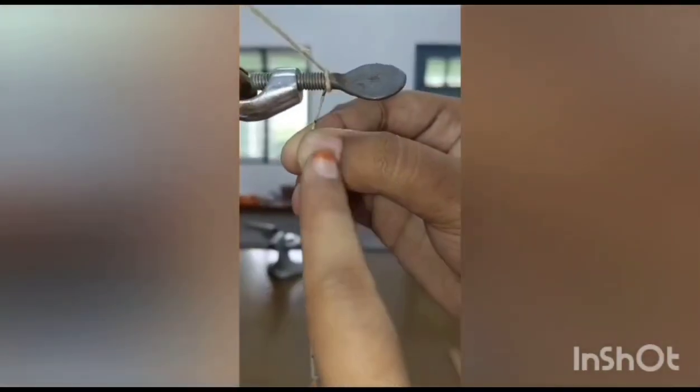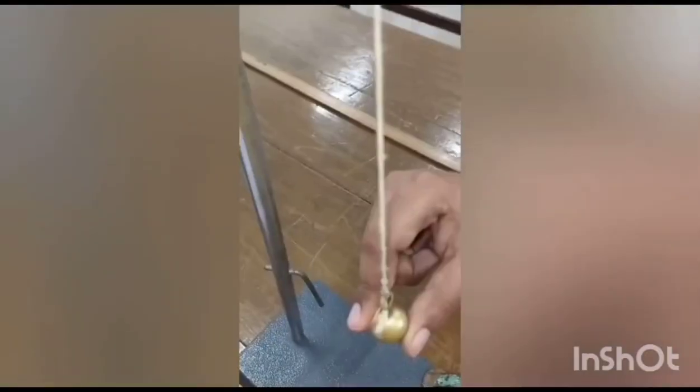After the arrangement of apparatus we should oscillate the bob through a small angle for 20 oscillations. Also we should record the time period for 20 oscillations and take five observations for each length and find mean of them.